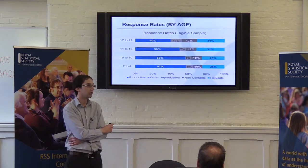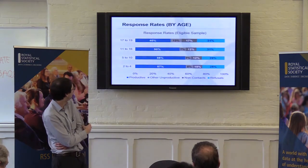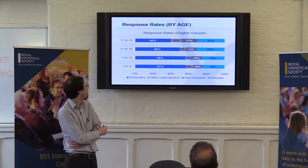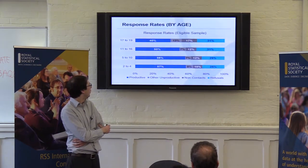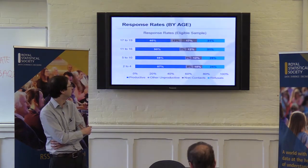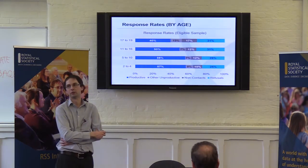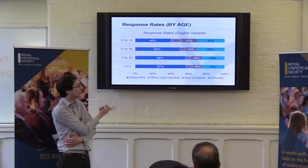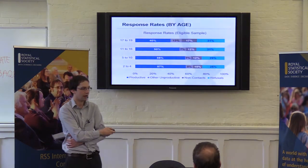Response rates differed by age. For 2 to 4 and 5 to 10 year olds, response rates were highest, around 56 to 57%, with refusal rates around a quarter. For 11 to 16 year olds, response dropped to 50%, mainly driven by an increase in refusals up to 31%. For 17 to 19 year olds, this was the hardest group to make contact with — 40% response rate overall. The refusal rate was similar for 11 to 16 and 17 to 19 year olds, but an increase in non-contact and other unproductives drove the lower rate for the older group.